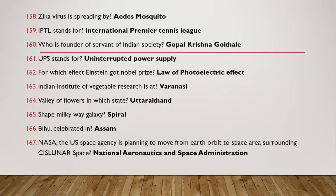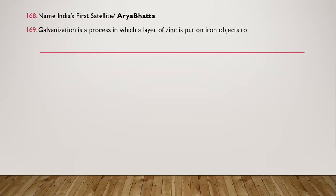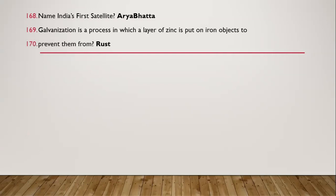Question 164: NASA stands for National Aeronautics and Space Administration. Question 165: Name India's first satellite — it is Aryabhatta. Question 166: Galvanization is a process in which a layer of zinc is put on iron objects to prevent them from rust.